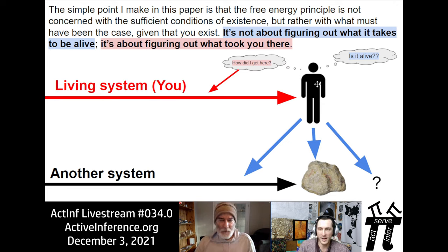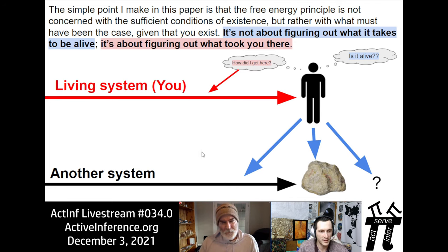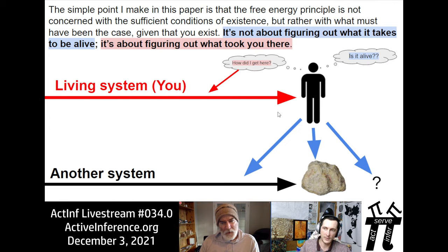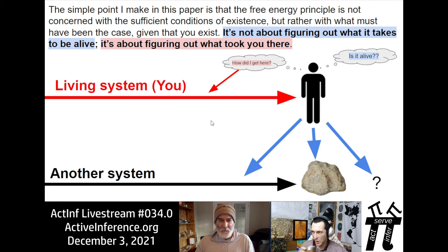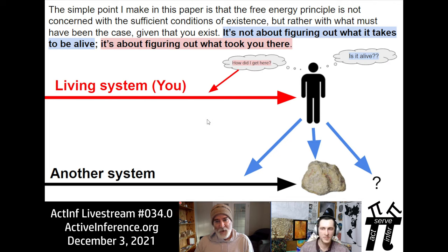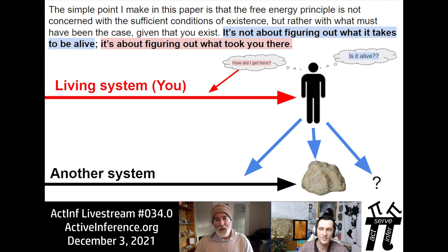The red line is the system looking back: how did I get here? The question often asked by living systems is whether something is alive — that's answering Schrödinger's question. Is the FEP about the system projecting back and asking what took me there? Or is it looking out to another system and asking whether it will be the meter stick of what is alive or not? The 'what is alive' question can be placed beside the 'when is alive' question. If we look only at what is alive, we may over-reduce. But if we include when is alive, things get very interesting very fast.